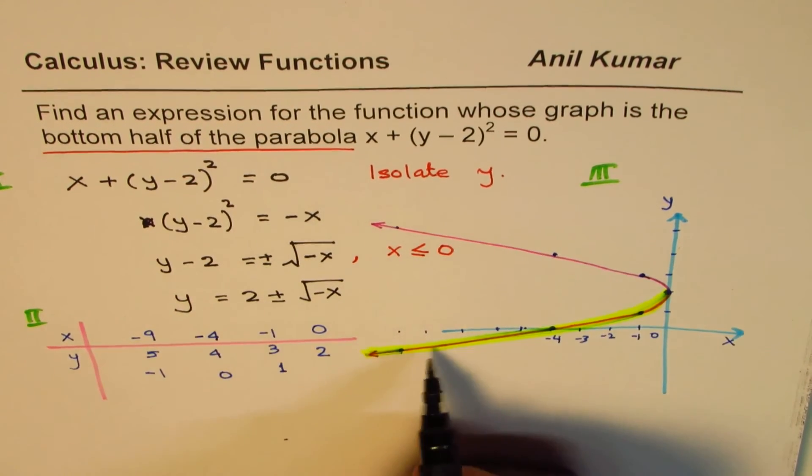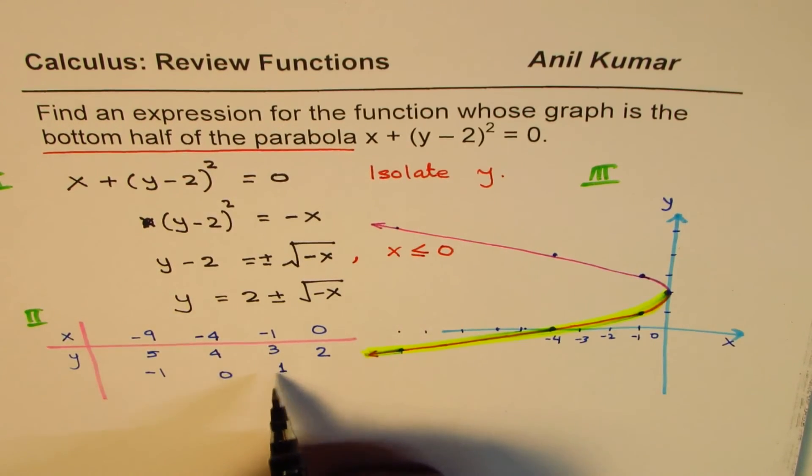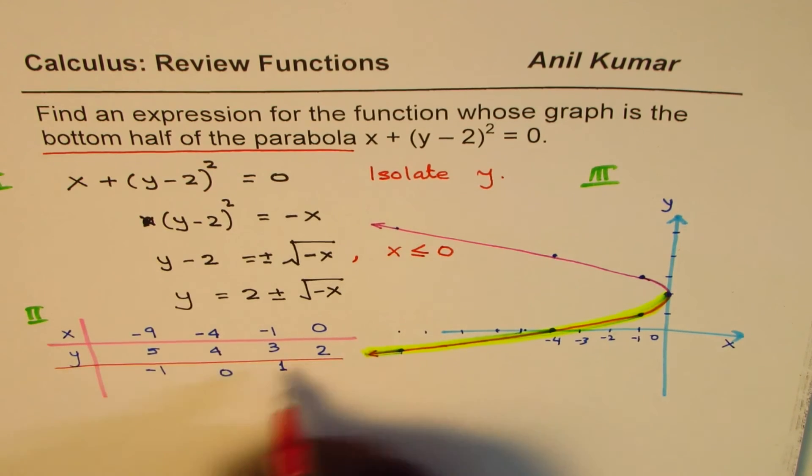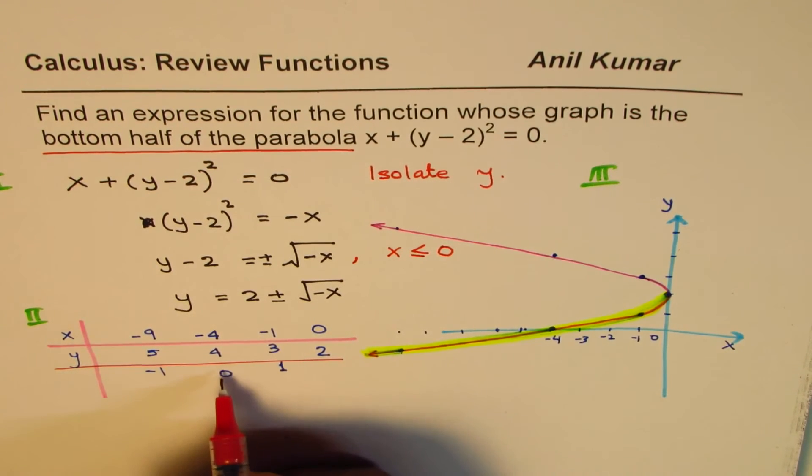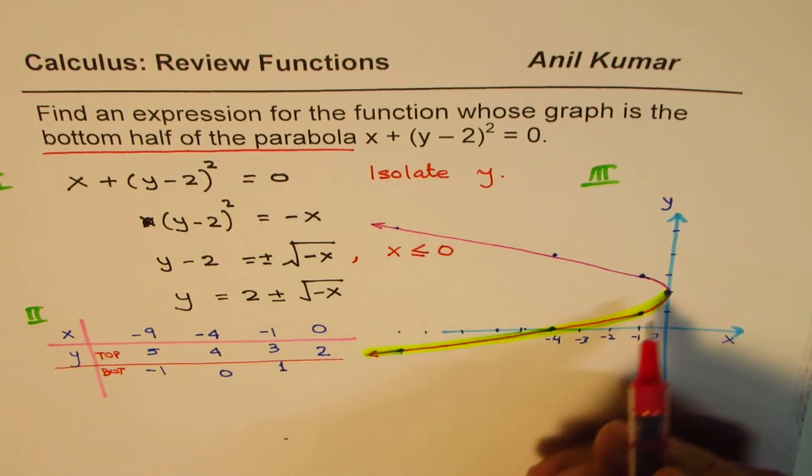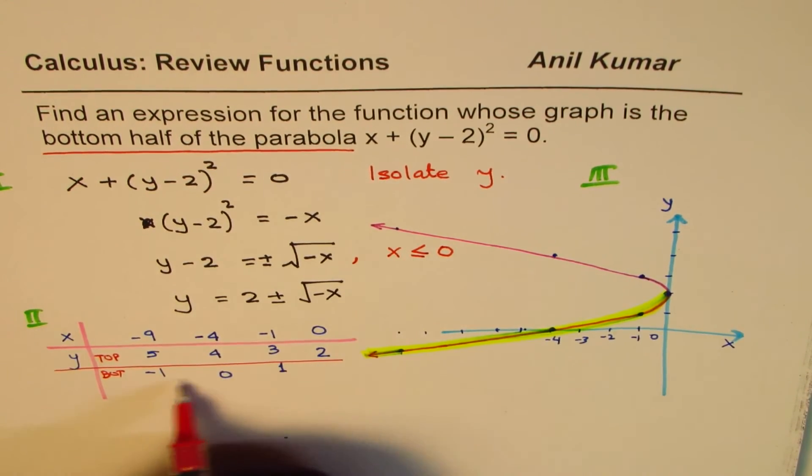Now, this equation is for two values. You see those two values? We have y values which are a set of two values. This one is the top part, and that is the bottom part. Do you see that? So we need this one. And how do you get these values?